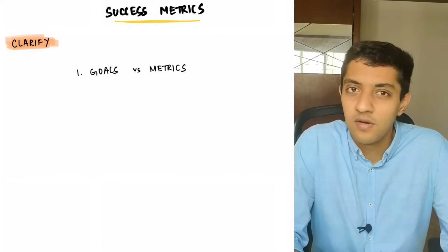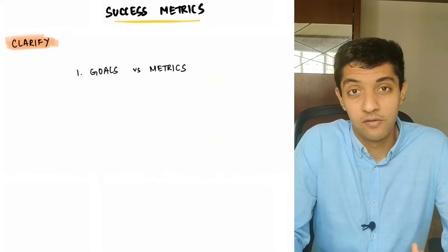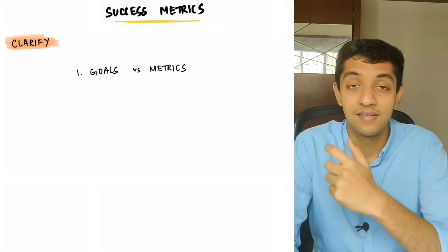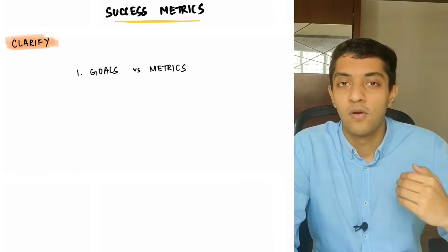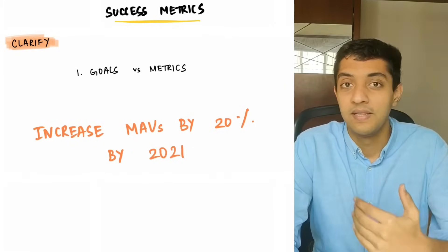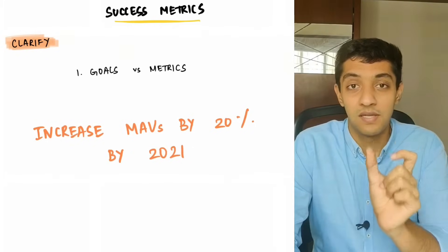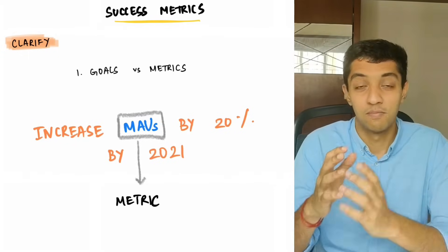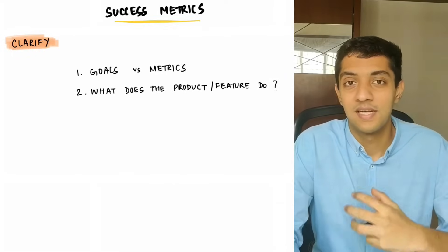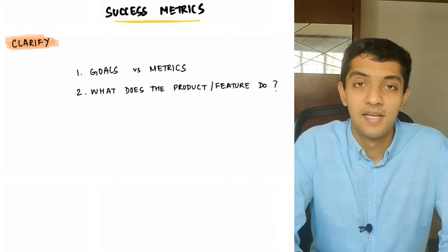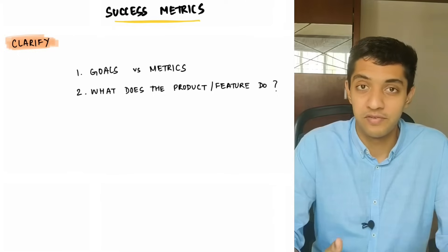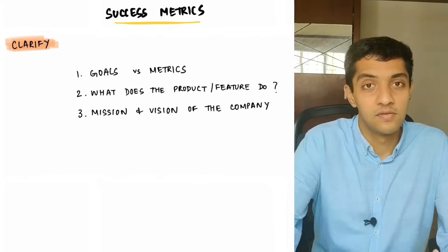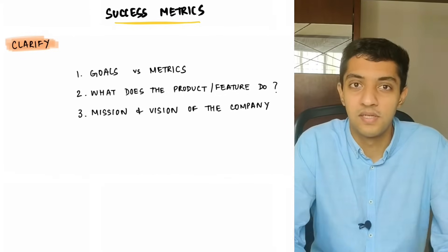The first step is to clarify. You'd want to clarify what exactly the interviewer is looking for, because there is a big difference between a goal and a metric. A goal has a metric, a target, and a timeframe — for example, increase monthly active users by 20% by the end of 2021, where the metric is monthly active users. You'd also want to clarify what the company, product, or feature does in one sentence, and discuss the mission and vision so both you and the interviewer are on the same page.